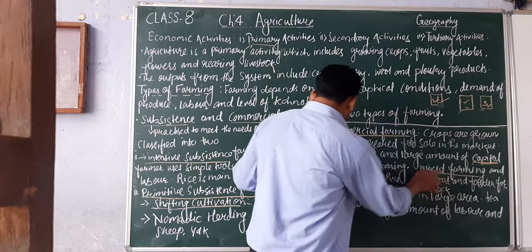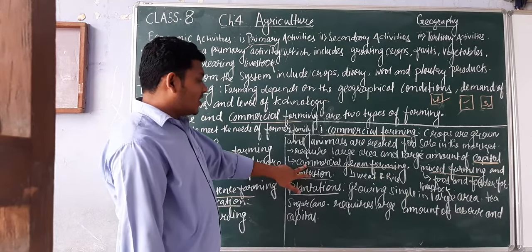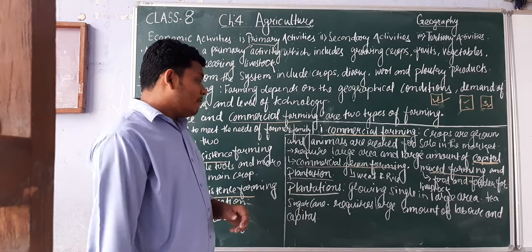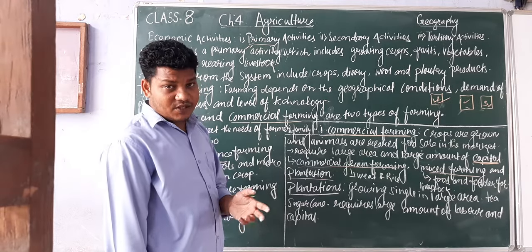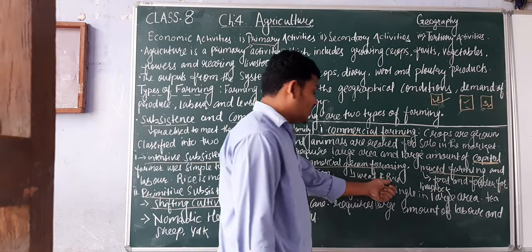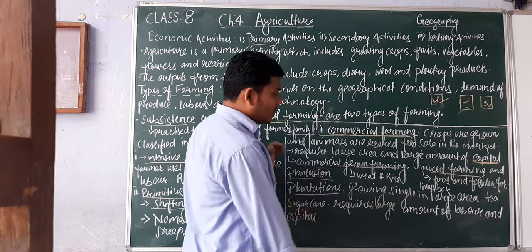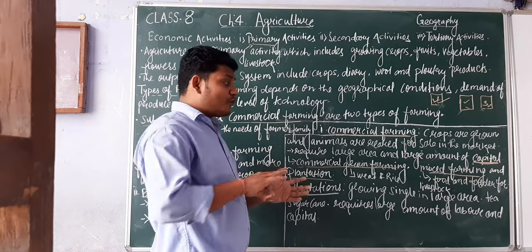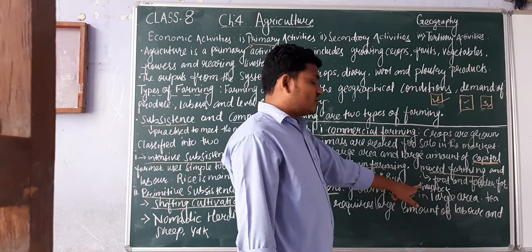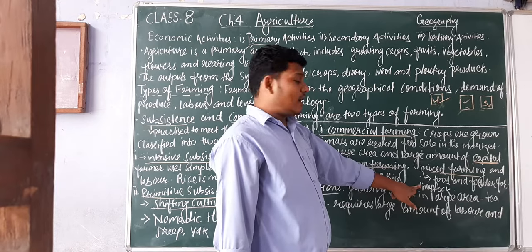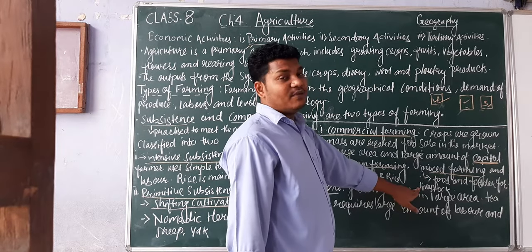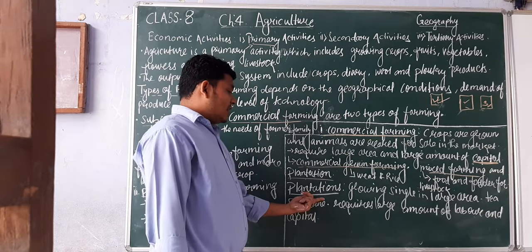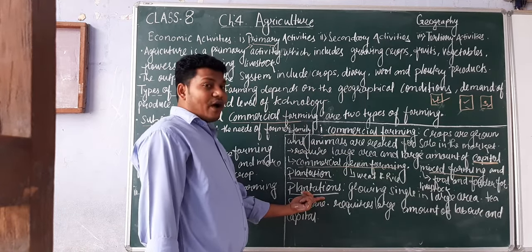Commercial farming is classified into three types. First is commercial grain farming, where food crops like wheat and rice are grown for selling purposes — most of the land is devoted to wheat and rice cultivation. Second is mixed farming, where farming is done for both food crops and fodder for livestock — both food and animal feed are produced together.